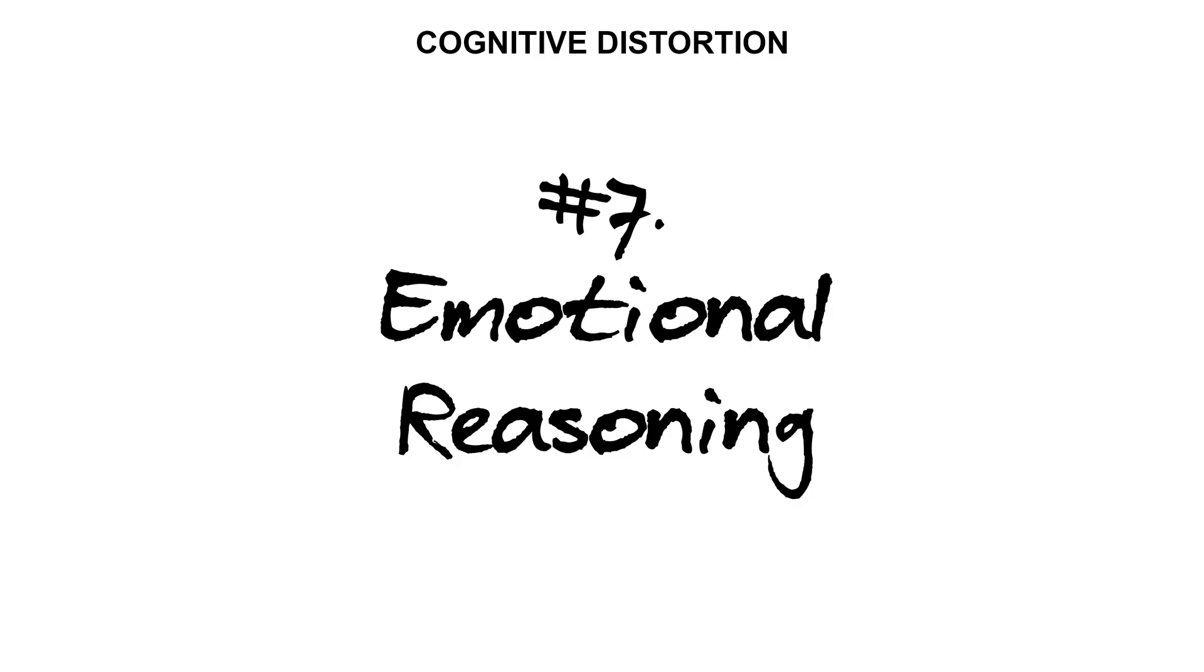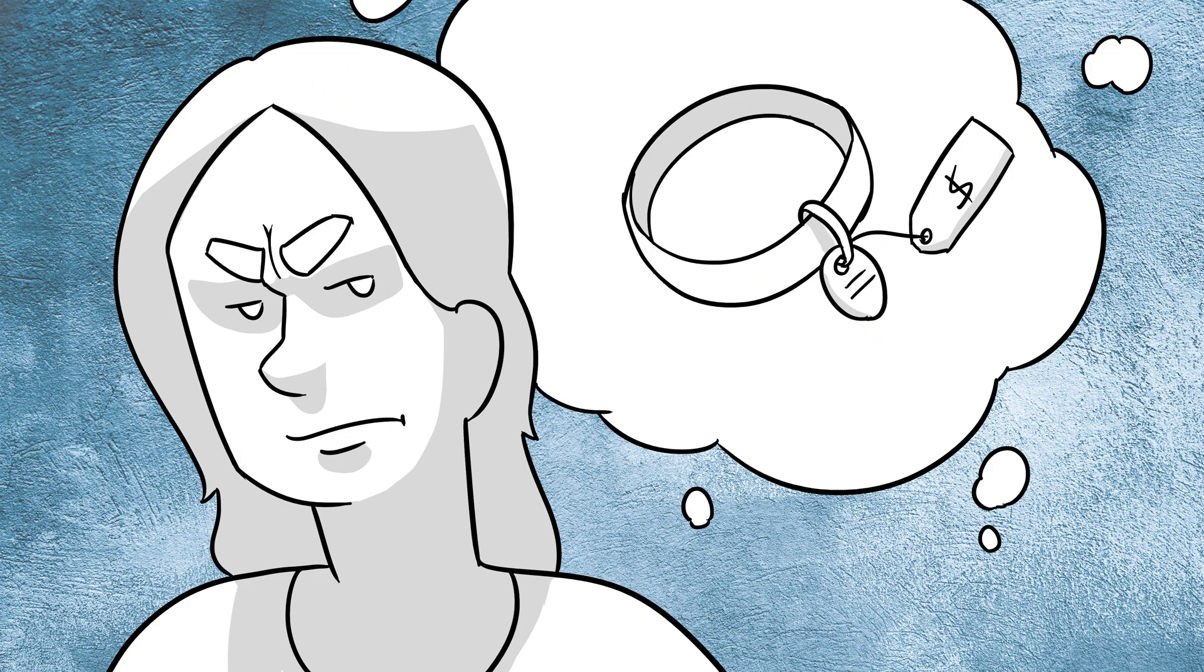Cognitive distortion number seven, emotional reasoning. This happens when we take our emotions as truth. Because we feel a certain way, we believe that something must have happened to cause that feeling. She said she didn't do it, but she must have sold my puppy or else I wouldn't be so furious at her right now. Emotions are not evidence or facts. Just because a person is angry or upset is not evidence that something actually occurred.